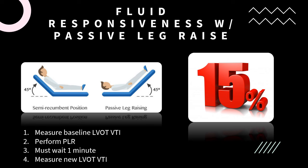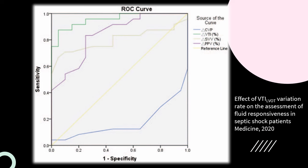Why 15%? There is some variability in LVOT VTI measurements from probe placement, angle of inclination, heart rate, and other factors, so we need to ensure the increase exceeds 15%. Of note, measuring blood pressure change with this method is not very accurate. Many methods have been described to determine fluid responsiveness. A recent study compared several common methods against a gold standard of thermodilution. The serial LVOT VTI measurement, shown in the green line, was the most accurate method and is completely non-invasive. Notably, the CVP performed below the reference standard line — worse than a coin flip. The LVOT VTI also has the fewest limitations: patients can be intubated on any tidal volume and can have an arrhythmia.